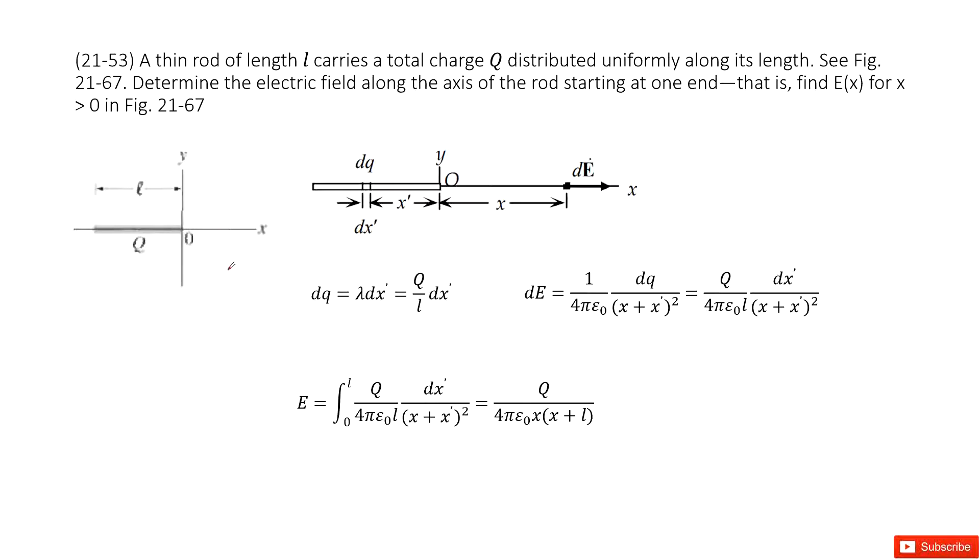We can see we have a thin rod of length L carries total charge Q distributed uniformly along its length. So this is a wire, right? And its length L is located from zero to negative L. We need to find the electric field density for x larger than zero.